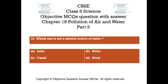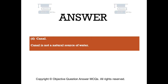Question number 10. Which one is not a natural source of water? Option A: Lake. Option B: River. Option C: Canal. Option D: Pond. The right answer is Option C — Canal. Canal is not a natural source of water.